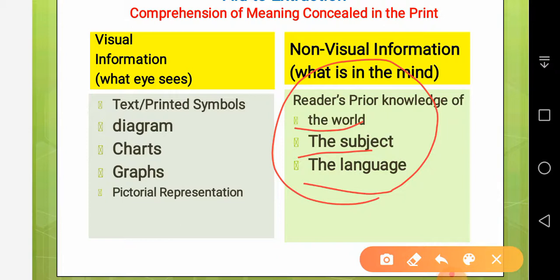A good reader can extract all types of meaning from a written text — shift facts from opinion, identify the attitude of the writer, skim and scan information. All of these sub-skills are facilitated and aided by visual and non-visual information on the page.